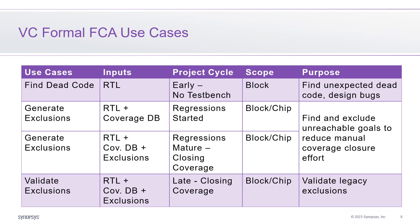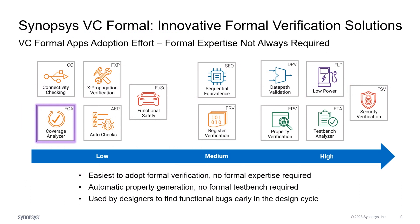VC Formal FCA has been used in different use cases. Designers use VC Formal FCA at the block level to find dead code in the RTL, which usually indicates unexpected design bugs. Verification engineers use VC Formal FCA during simulation regression to generate exclusions and validate legacy exclusions. These use cases help accelerate simulation coverage closure. VC Formal FCA is the easiest to adopt formal solution that can accelerate simulation coverage closure without the need for formal expertise or a formal test bench.